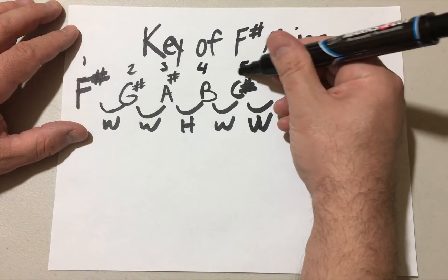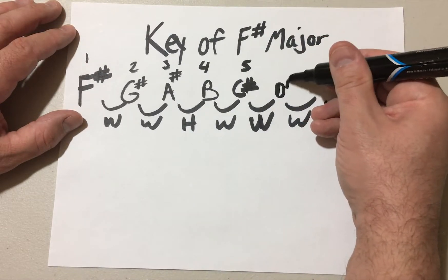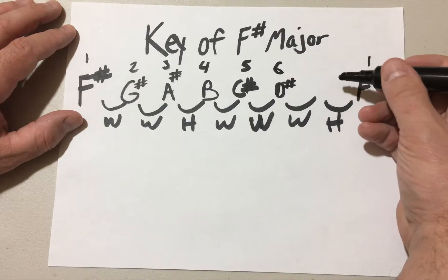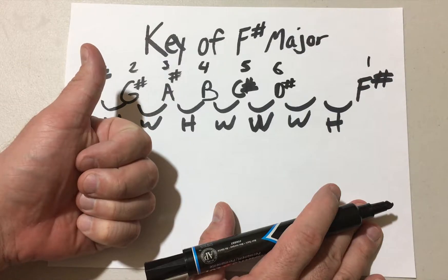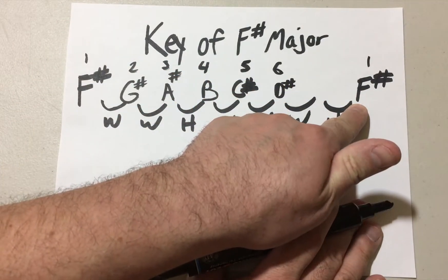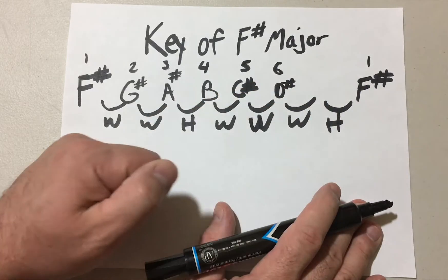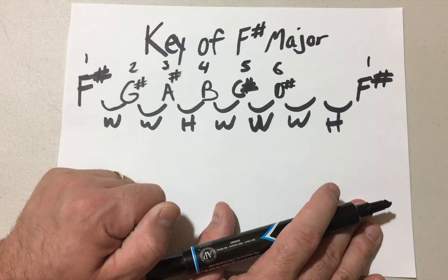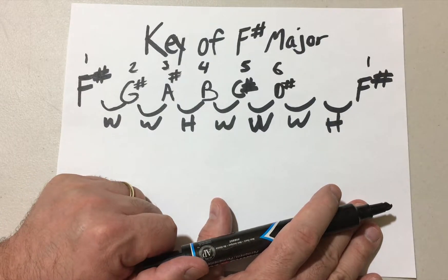B to C is a half step, another half step C sharp. C sharp is the four. C sharp is the five. C sharp to D sharp is gonna be a whole step. And a whole step again, it's gonna be D sharp to E, E to F. Right? But we already have an F of sorts.